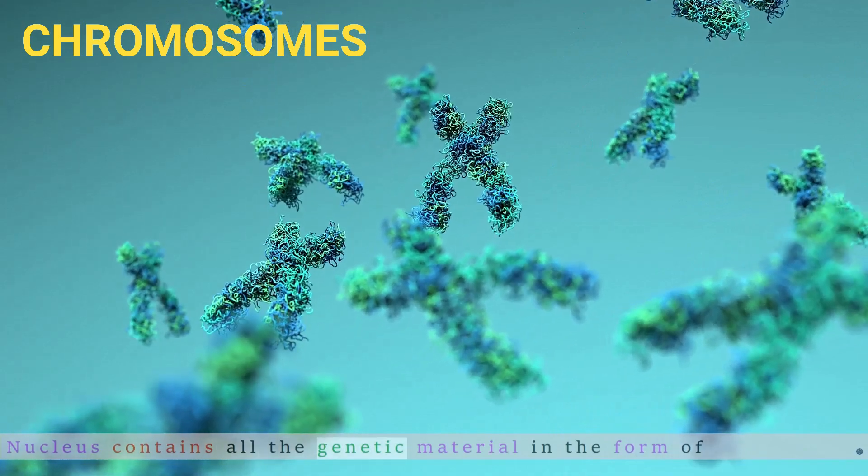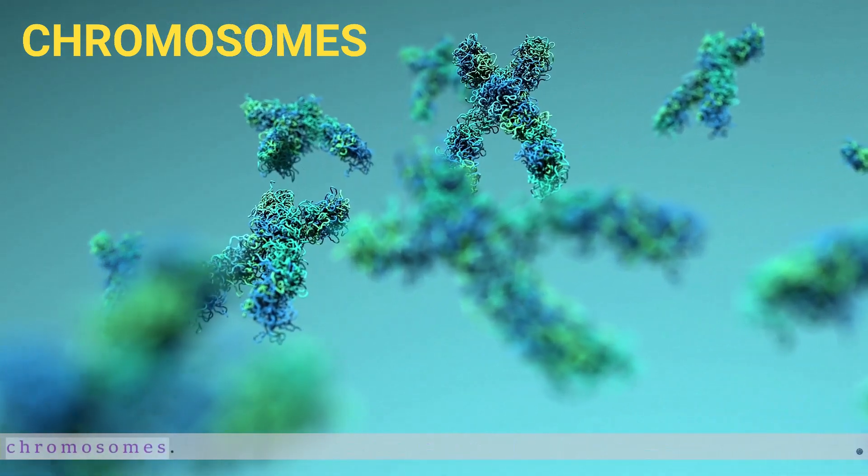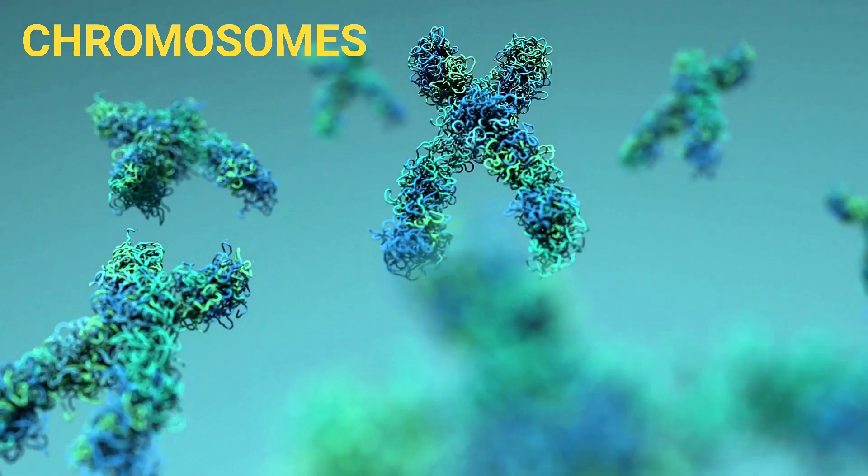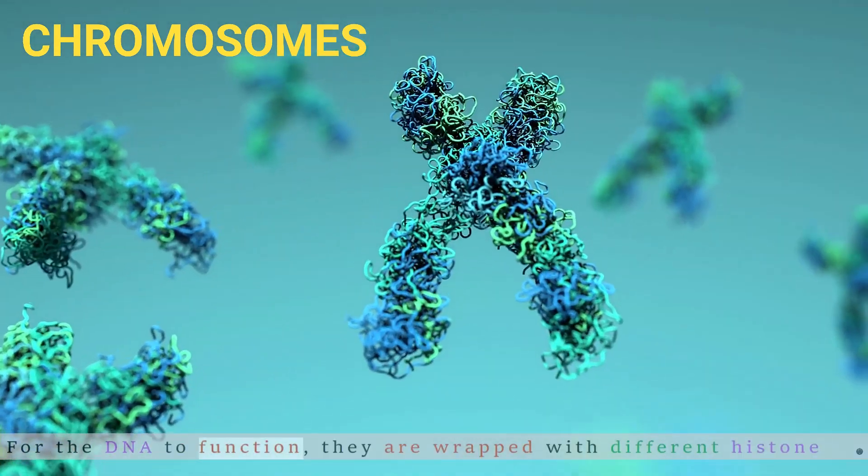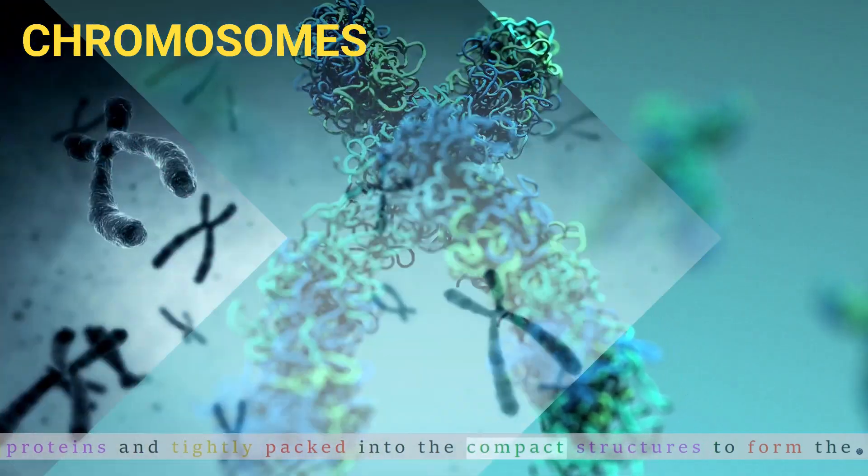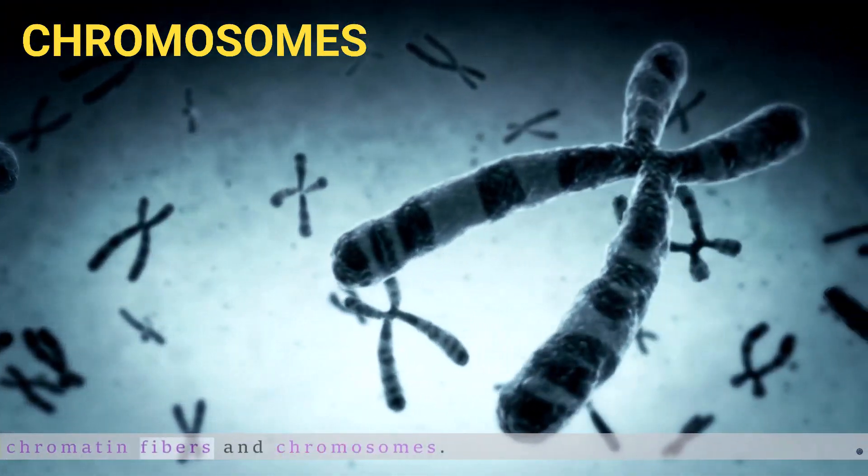The nucleus contains all genetic material in the form of chromosomes. For DNA to function, it is wrapped with different histone proteins and tightly packed into compact structures to form chromatin fibers and chromosomes.